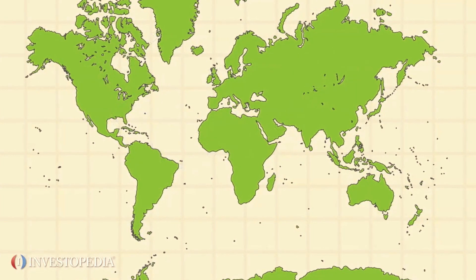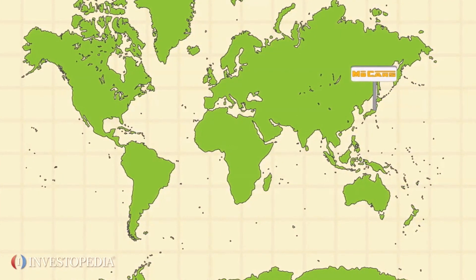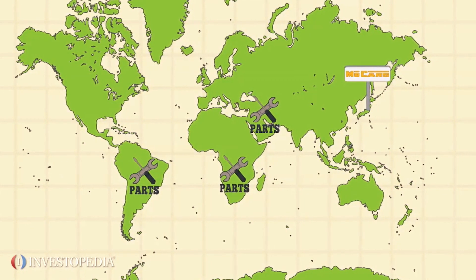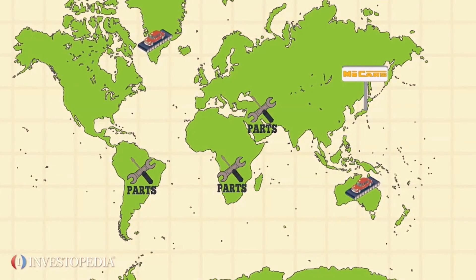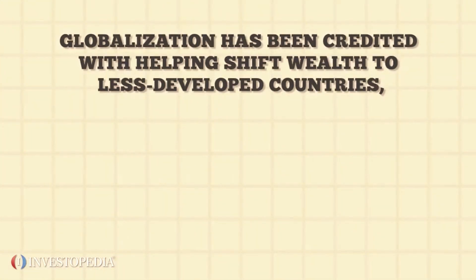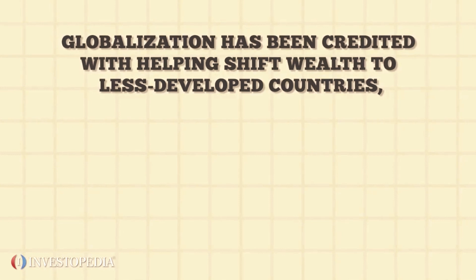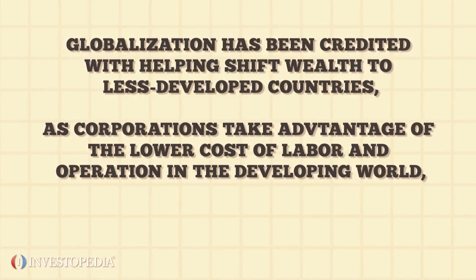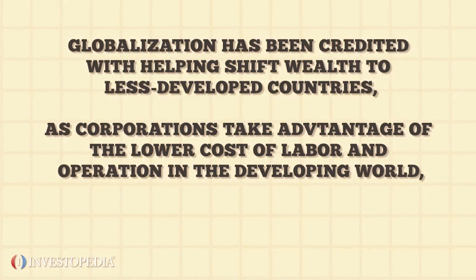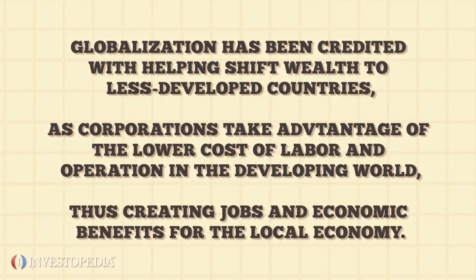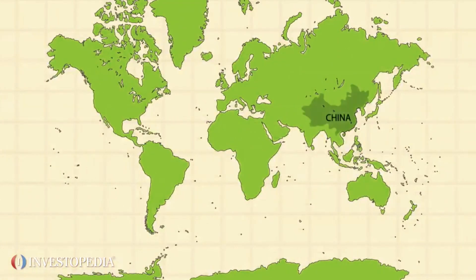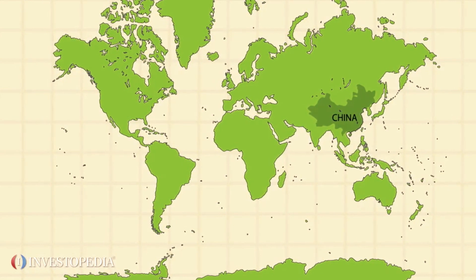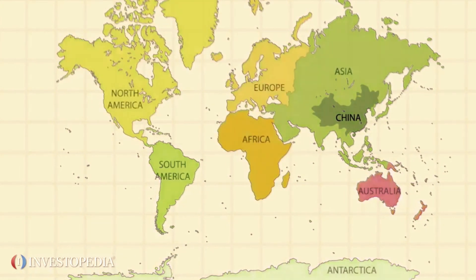With multinational corporations manufacturing, buying, and selling goods across the globe. For example, a car company based in Japan might have auto parts manufactured in several different developing countries, then ship the parts to another country for assembly, and then sell the finished car around the world. Globalization has been credited with helping shift wealth to less developed countries as corporations take advantage of lower costs of labor and operation in the developing world, thus creating jobs and economic benefits for the local economy. China is a good example of a country that has benefited immensely from globalization.